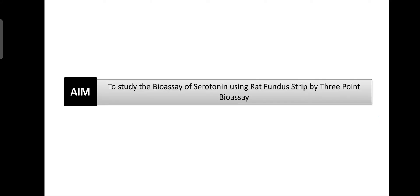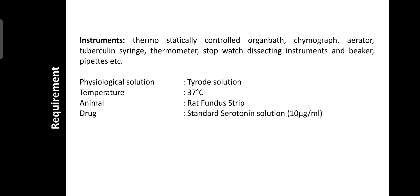The aim of this practical is to study the bioassay of serotonin using rat fundus strip by 3-point bioassay. Requirements include instruments such as a thermostatically controlled organ bath, kymograph, aerator, tuberculin syringe, thermometer, stopwatch, dissecting instruments, and beakers and pipettes.